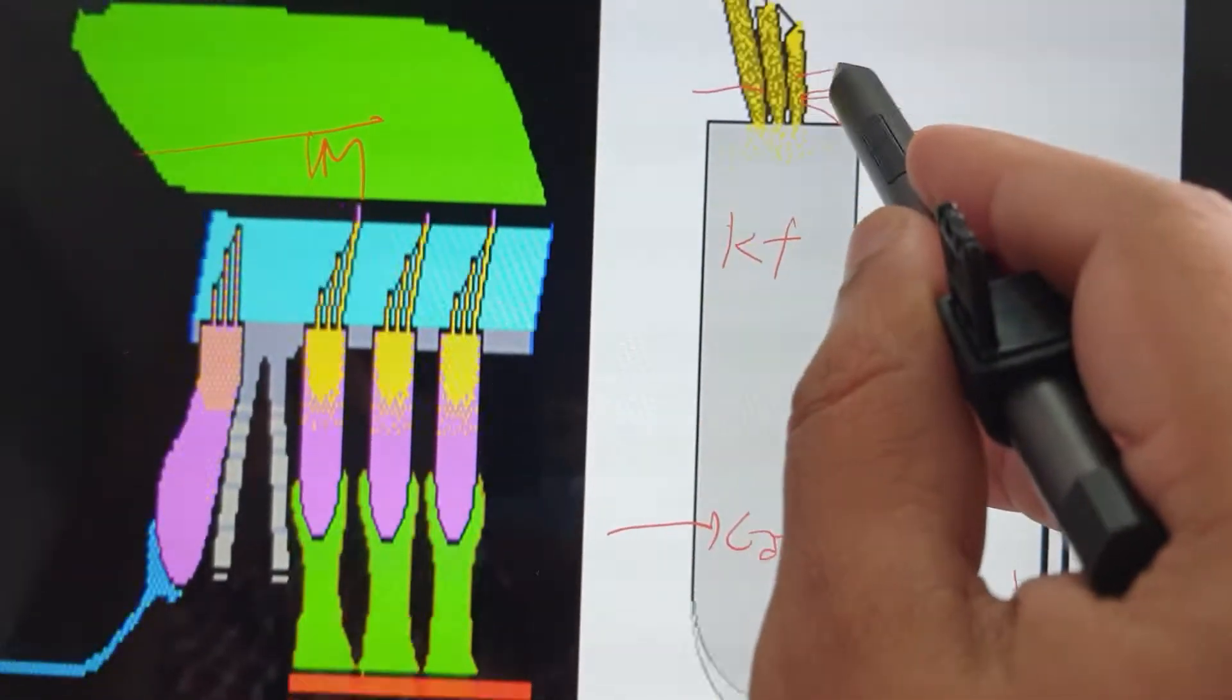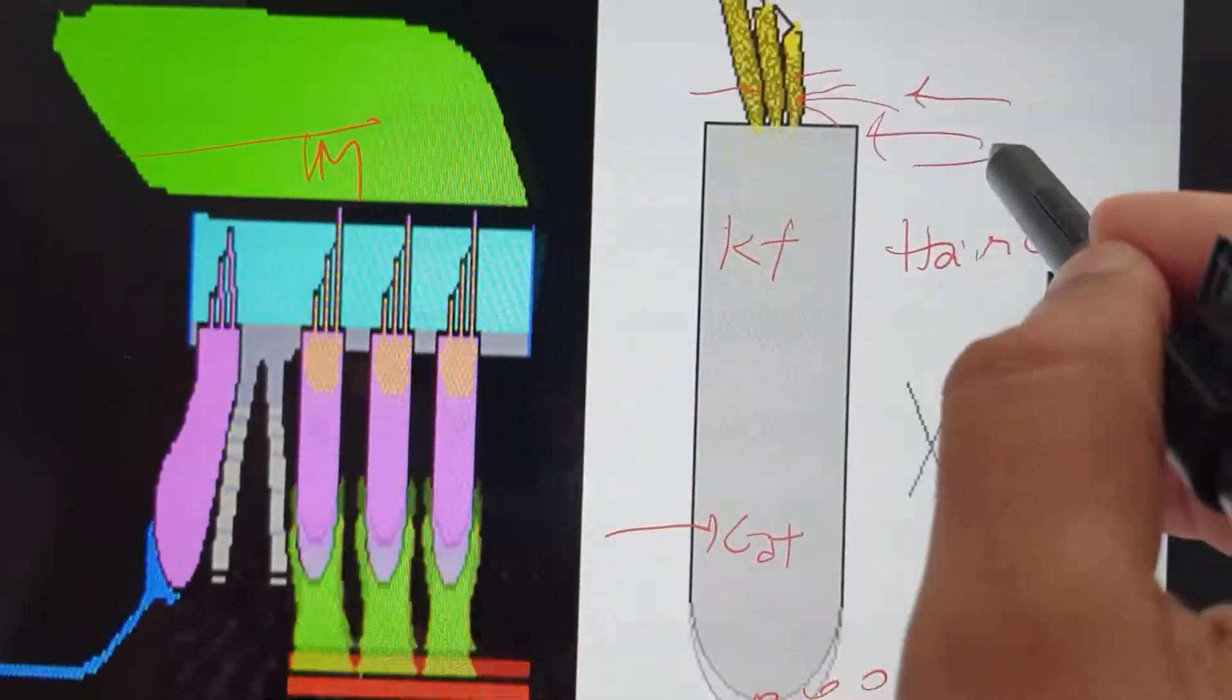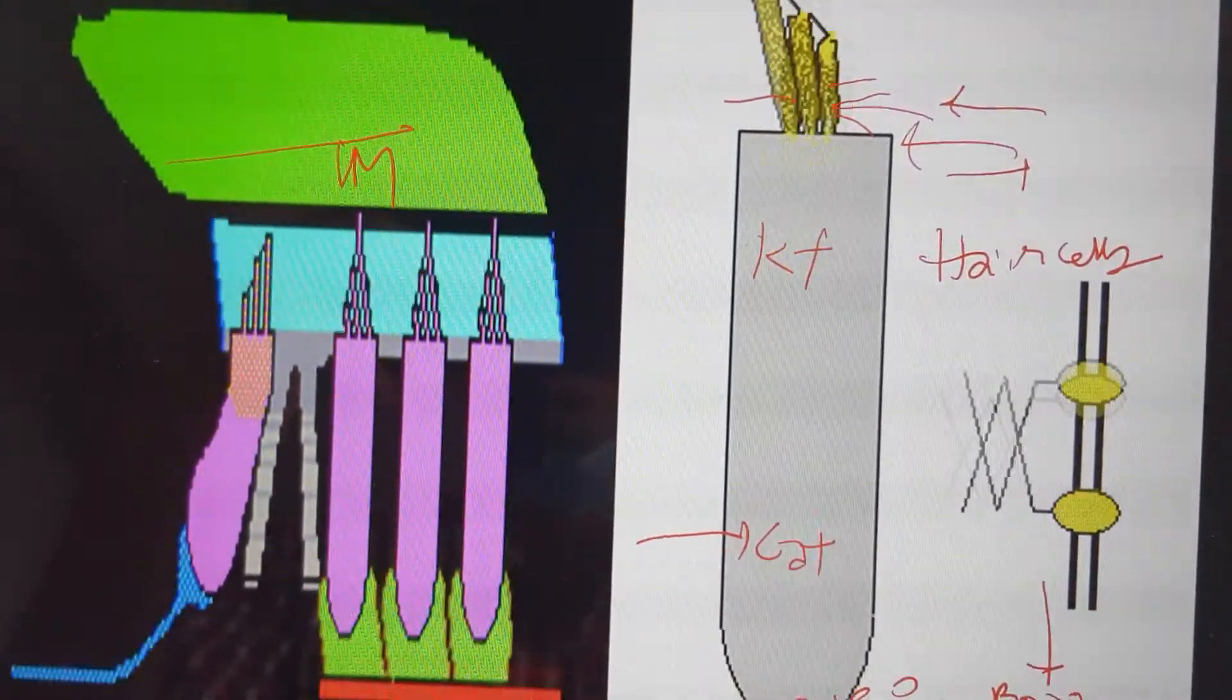This is the kinocilium, this is the stereocilium. Movement towards is depolarization, movement away is hyperpolarization, and in the resting state they are stable.